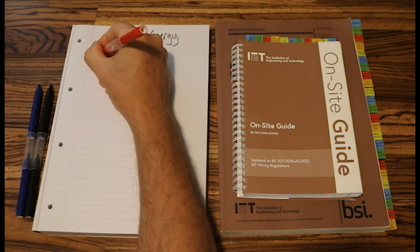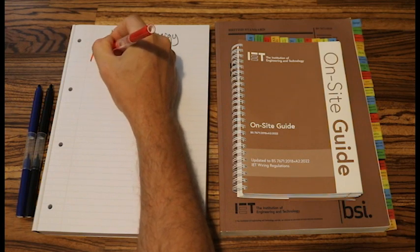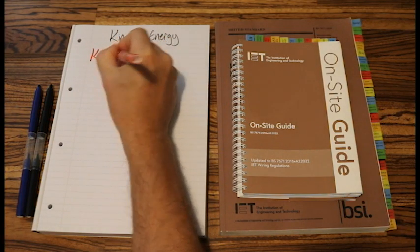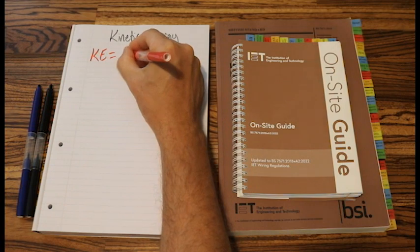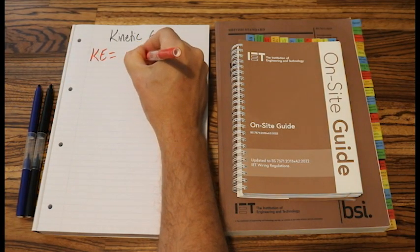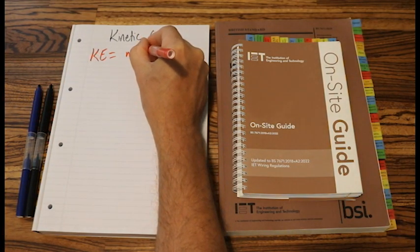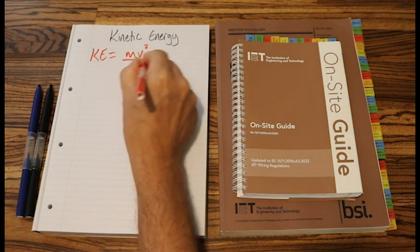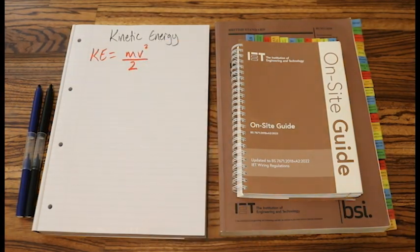So our first formula for kinetic energy is KE equals m, lowercase v, squared, over 2.